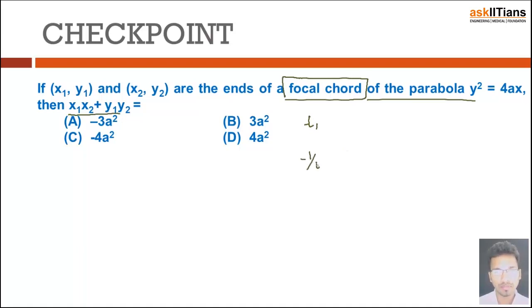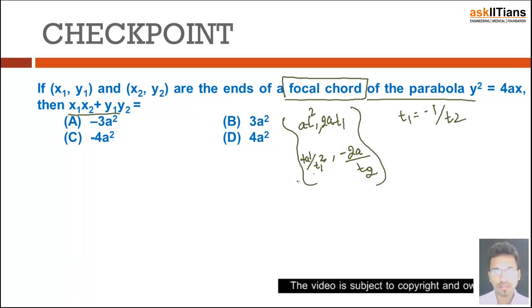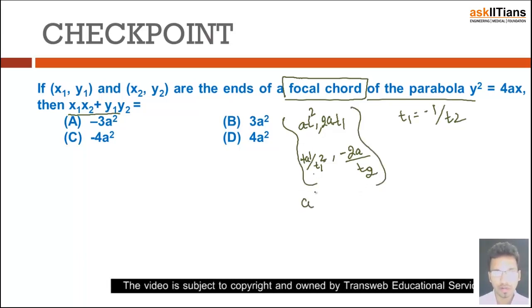So if I write it like that way, (at₁², 2at₁) and this one is (a/t₁², -2a/t₁). There will be a plus here because t₁ is equal to -1/t₂, so we can use that and this will be -2a/t₂. Now when we apply this condition and multiply the coordinates...